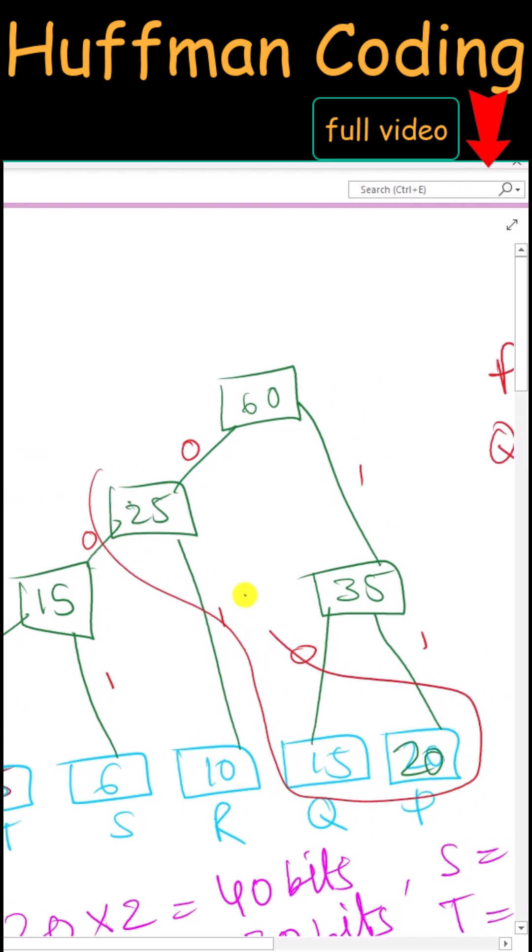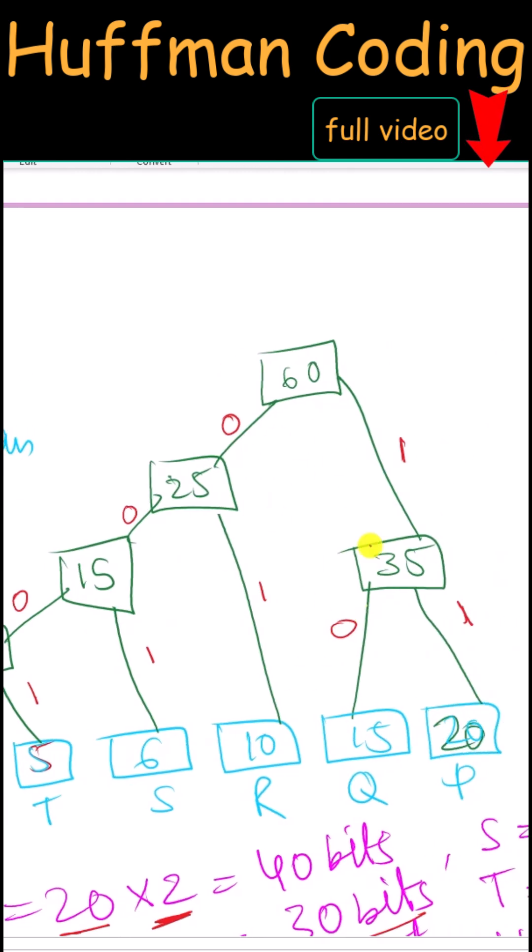Now again among these nodes, these two are minimum. We have merged them together, so we have new node 35, and lastly we have merged these two nodes. So we have 60 right here. Here we have the tree.